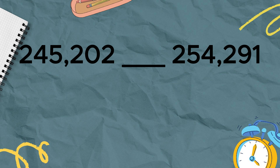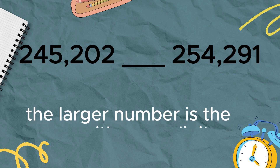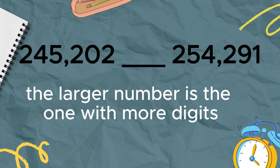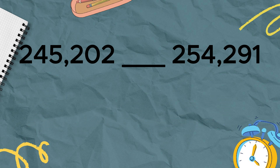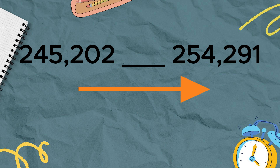How many digits are in the first number? How about the second number? Yes, they both have the same number of digits. When two numbers are compared, the larger number is the one with more digits. But since they have the same number of digits, the next thing to do is to compare each digit from left to right.